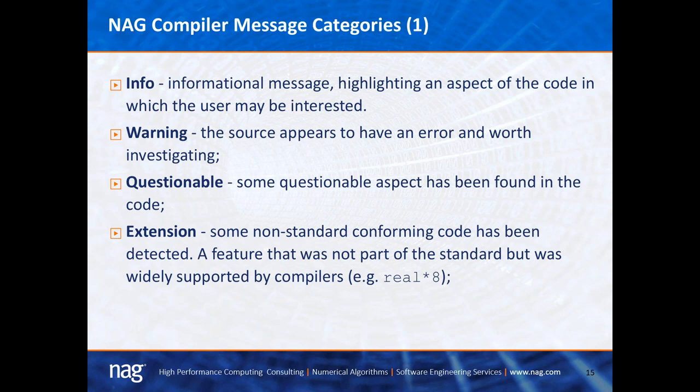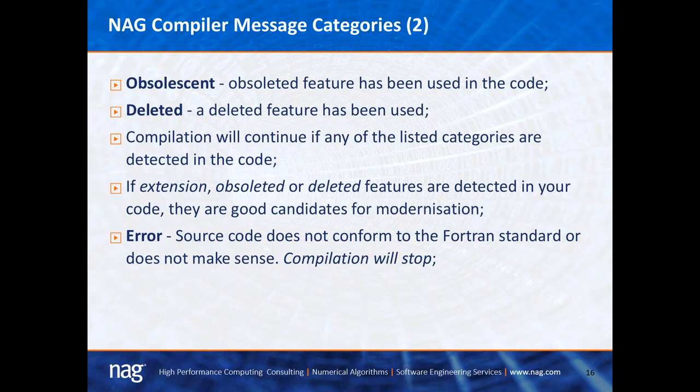The next category is an extension, where non-standard conforming code has been detected — for example, using REAL*8, which is not part of the standard but was widely supported by compilers. The next categories are obsoleted features and deleted features found in the code. For all the categories mentioned, compilation will continue. If the compiler encounters any extensions, obsoleted, or deleted features, they are really good candidates for modernization. The last category is an error, where the source code does not conform to the standard or does not make sense.